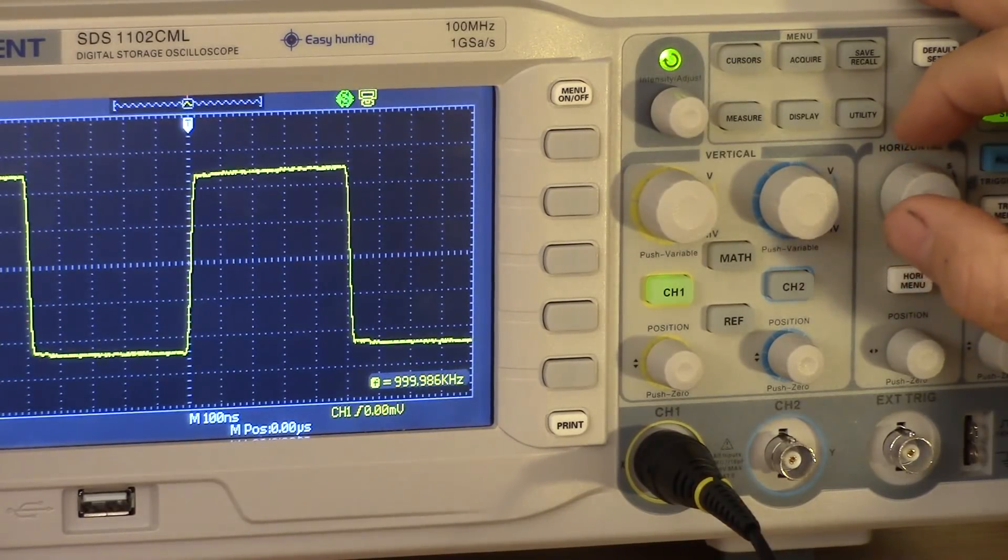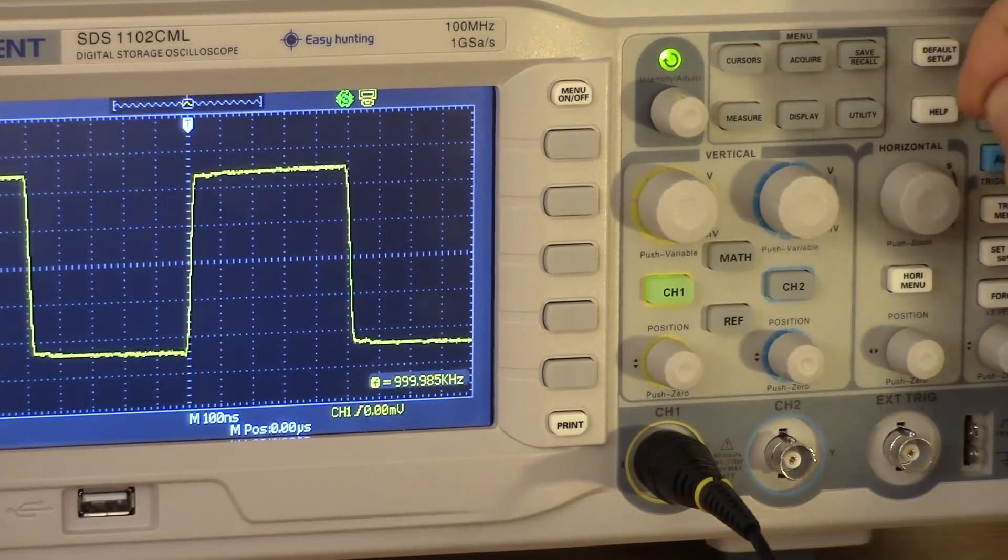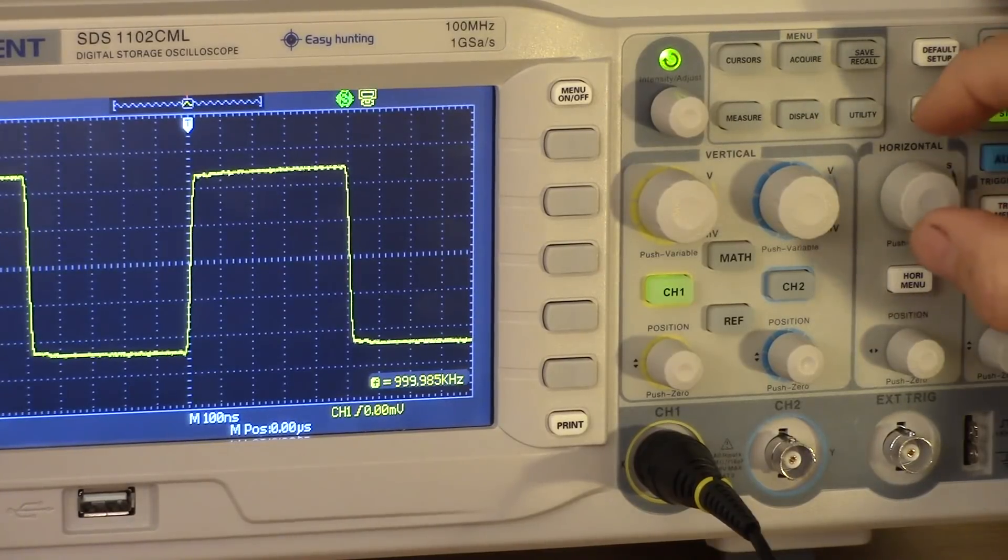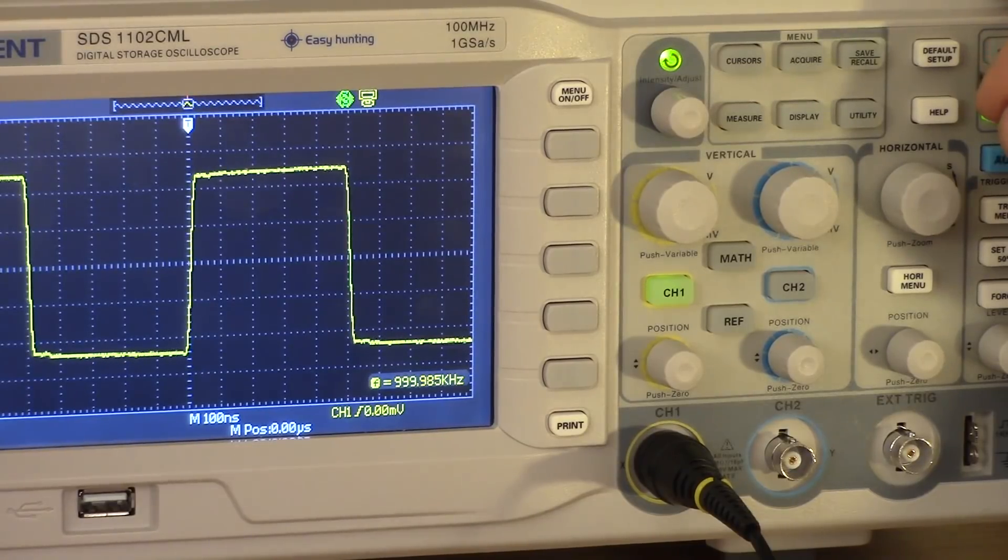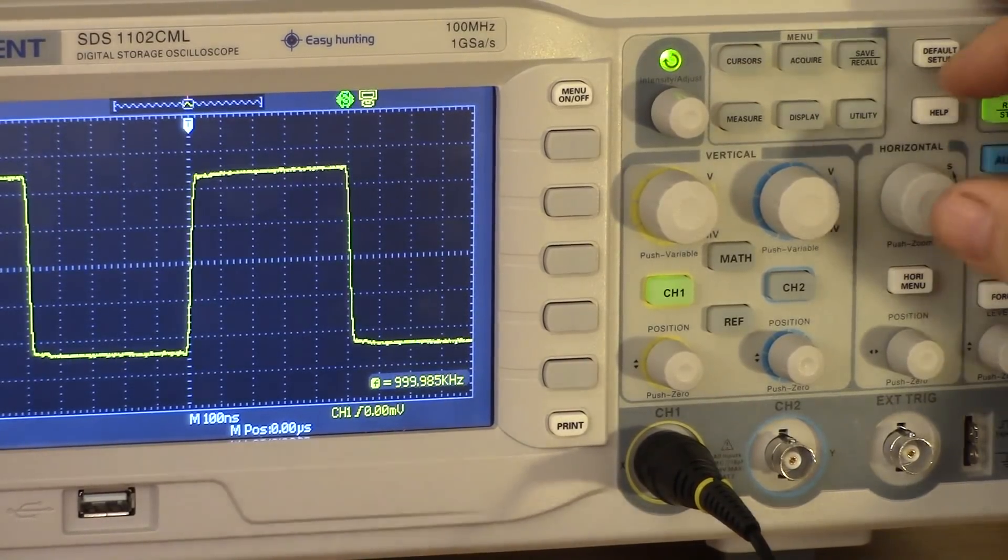And so my theory is that there's a little bit of uncertainty on the trigger level. Now, it turns out that an awful lot of these low-priced scopes that I've looked at have the same problem. So it's probably just the nature of the beast.